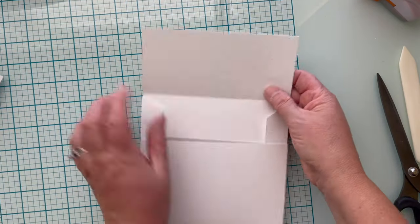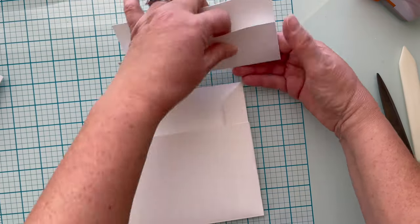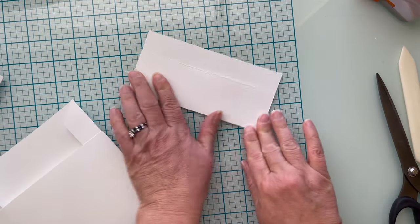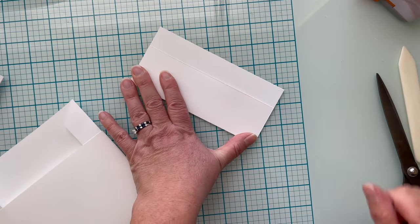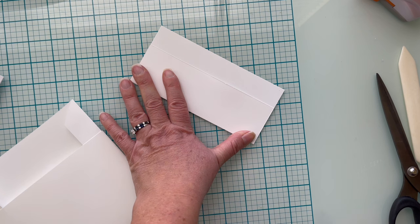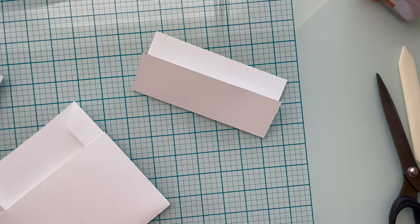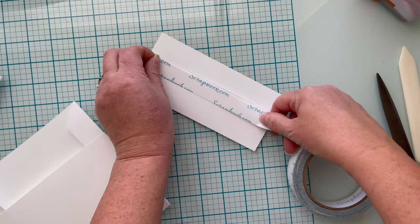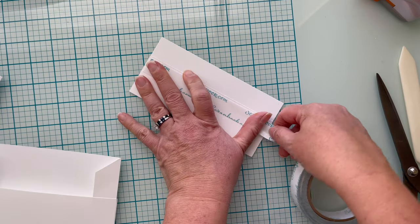To adhere this permanently into the card base we're going to take the flap out, fold the bottom flap upward and we're going to go ahead and add some adhesive. Now I'm using a scrapbook.com double-sided adhesive tape that I'm going to be able to do in two swipes.